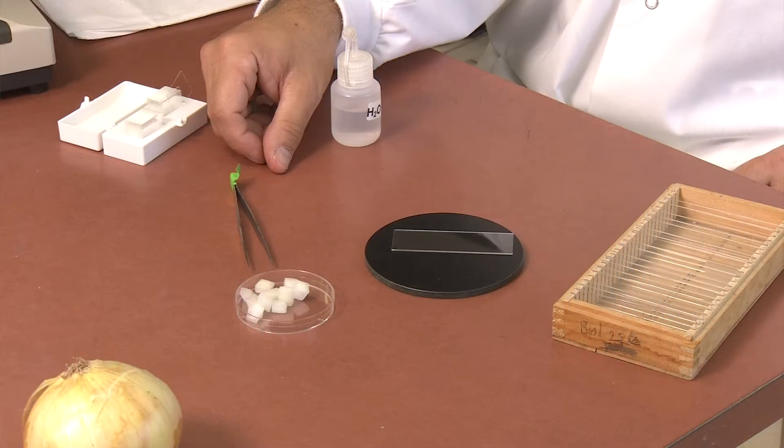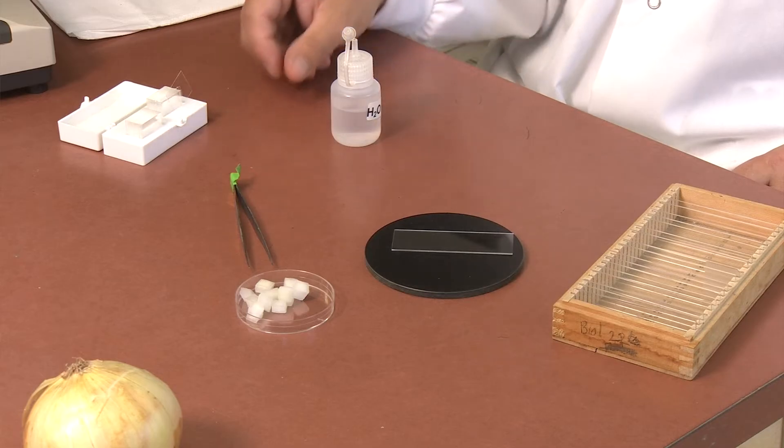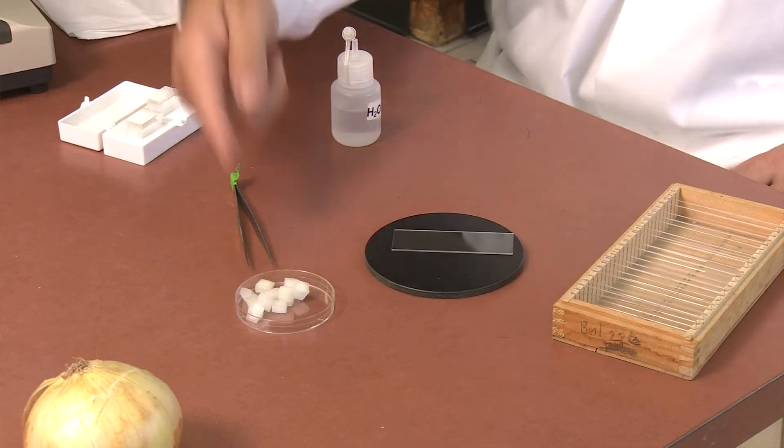In addition to slides and cover slips, you will need a piece of onion and fine forceps provided at the side bench.